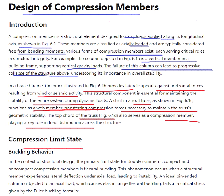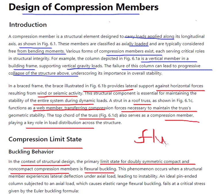Compression limit state: buckling behavior. In the context of structural design, the primary limit state of doubly symmetric, compact, and non-compact compression members is flexural buckling. That is the primary limit state for both compact and non-compact sections.